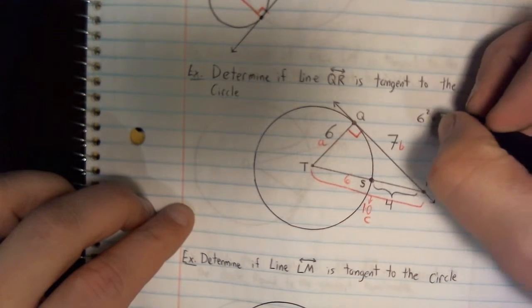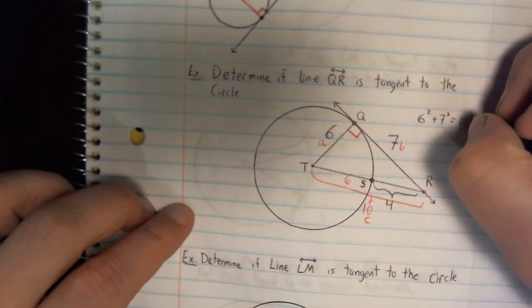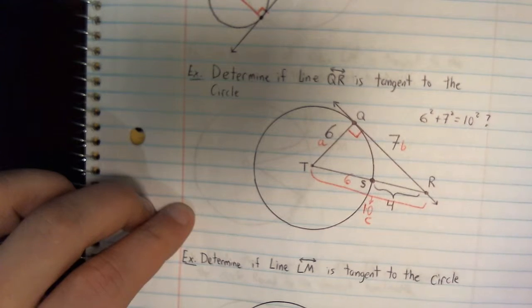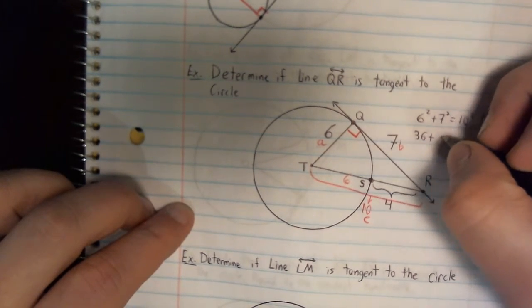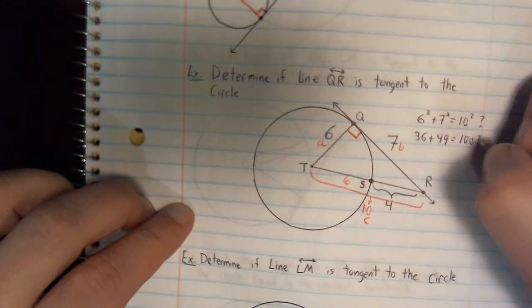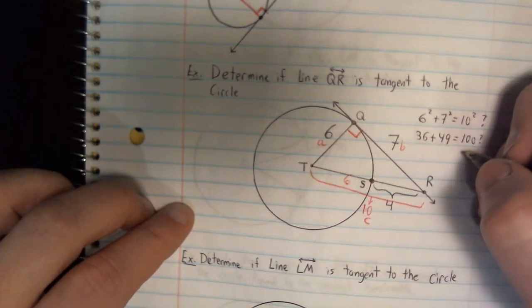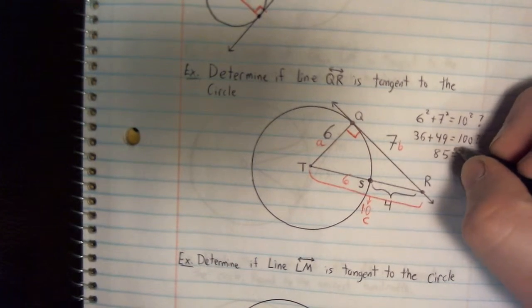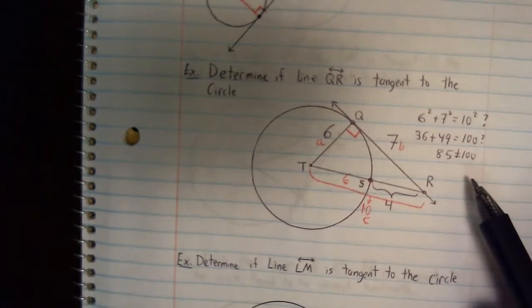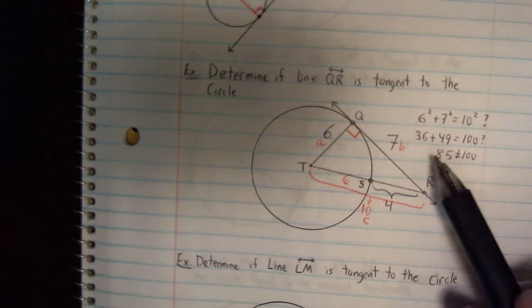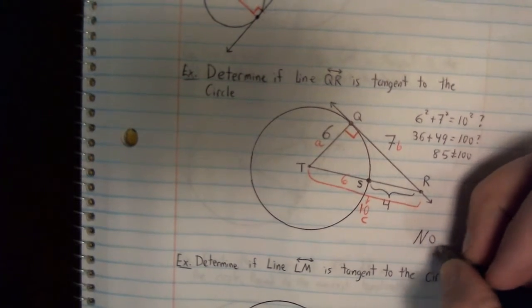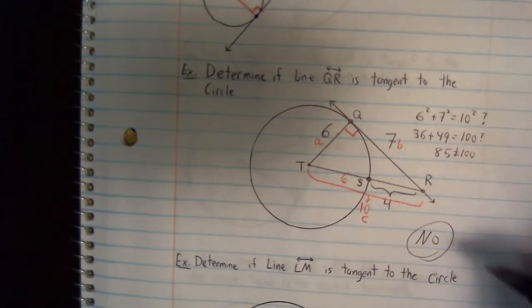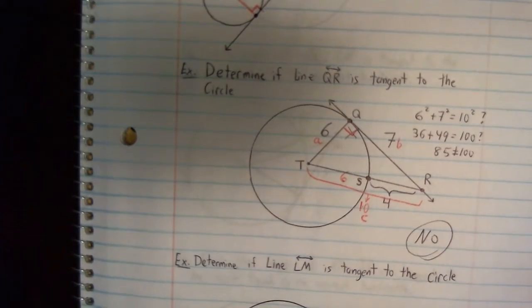So what I'm going to be doing here is I'm going to be testing. Is 6 squared plus 7 squared equal to 10 squared? If that's true, then this line is tangent. If this is false, we do not have a tangent line. So let's check. 36 plus 49, does that equal 100? It's not looking too good right here. 36 plus 49 is going to give me 85, which is definitely not equal to 100. So what we just found here is that this line is not tangent. So we can say no. And we did that by checking to see if the Pythagorean theorem was true. So this really is not a 90 degree angle either.